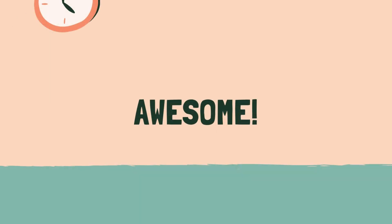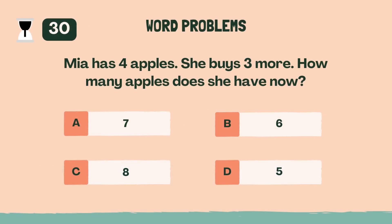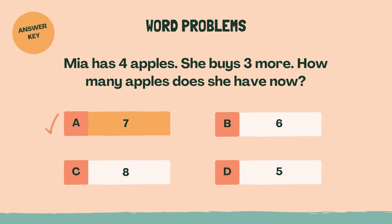Awesome. Last category coming up. Category 6: word problems. Three, two, one, go. Mia has 4 apples. She buys 3 more. How many apples does she have now? A, 7.